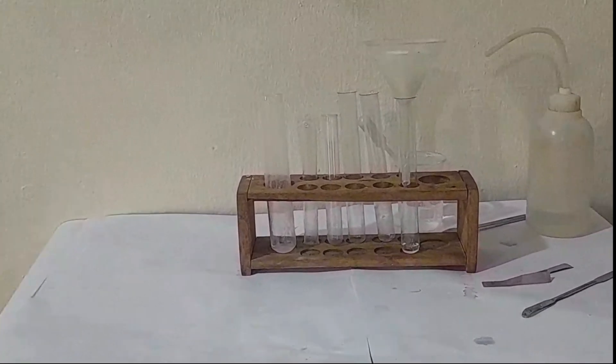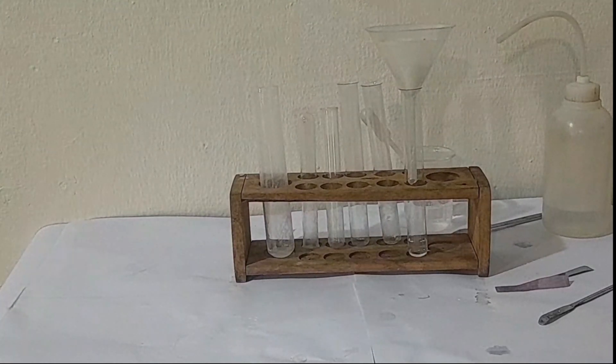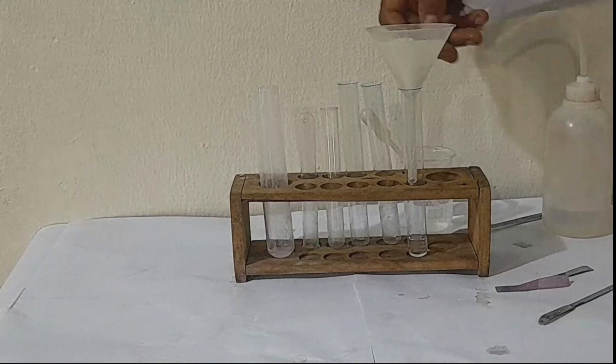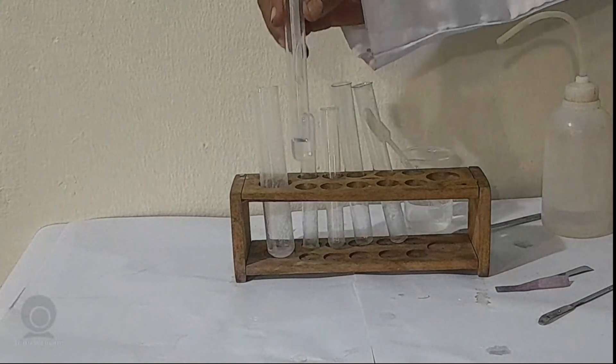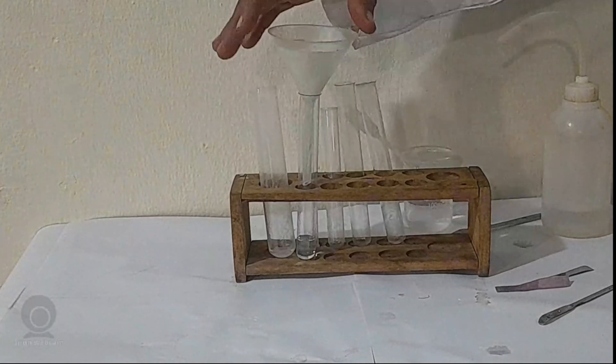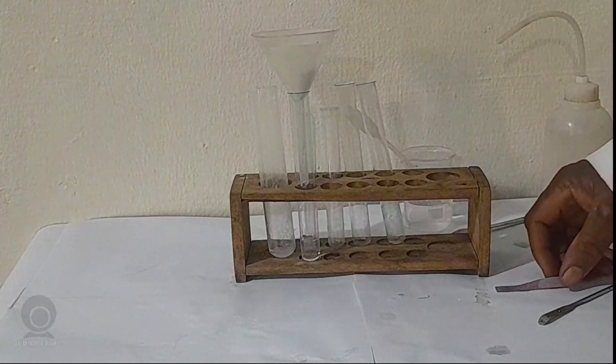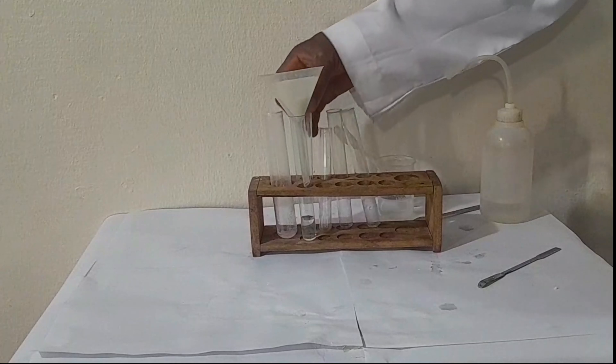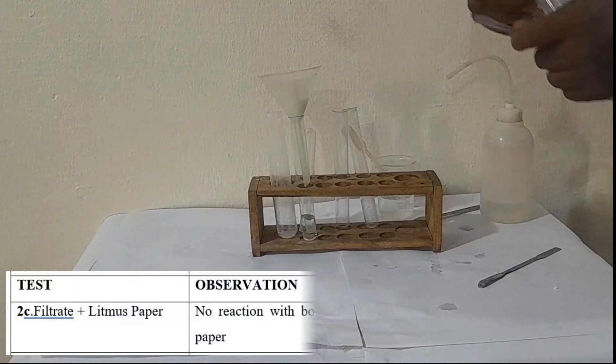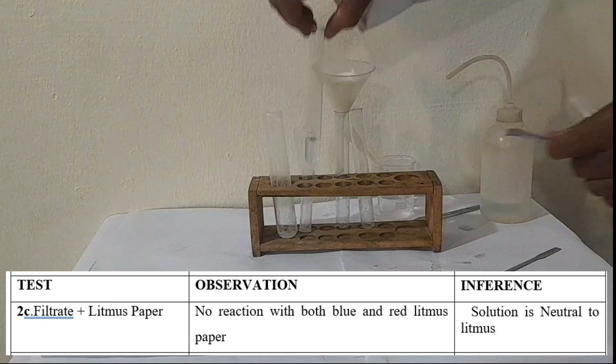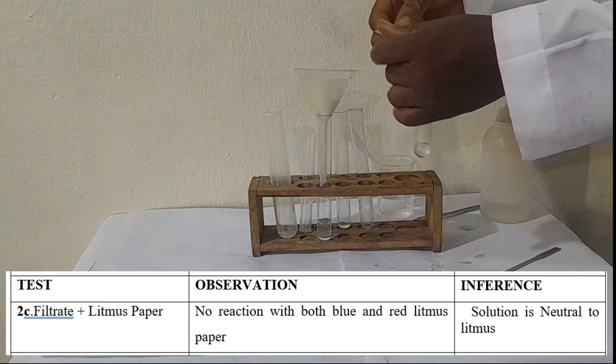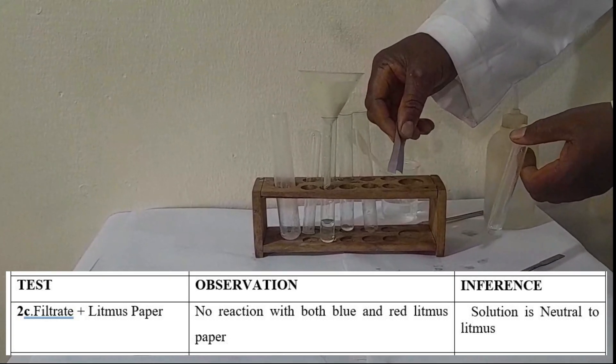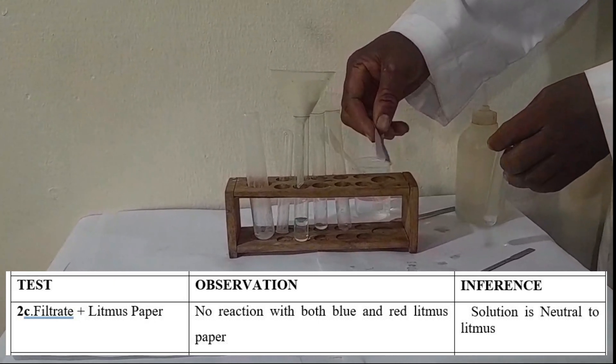While we are waiting, we can quickly do some analysis on the filtrate. Let's ascertain if our filtrate is acidic or basic. Let's use another litmus paper, a little portion of the filtrate. As you can see, both blue and red litmus paper, there's no reaction. It's a neutral solution.